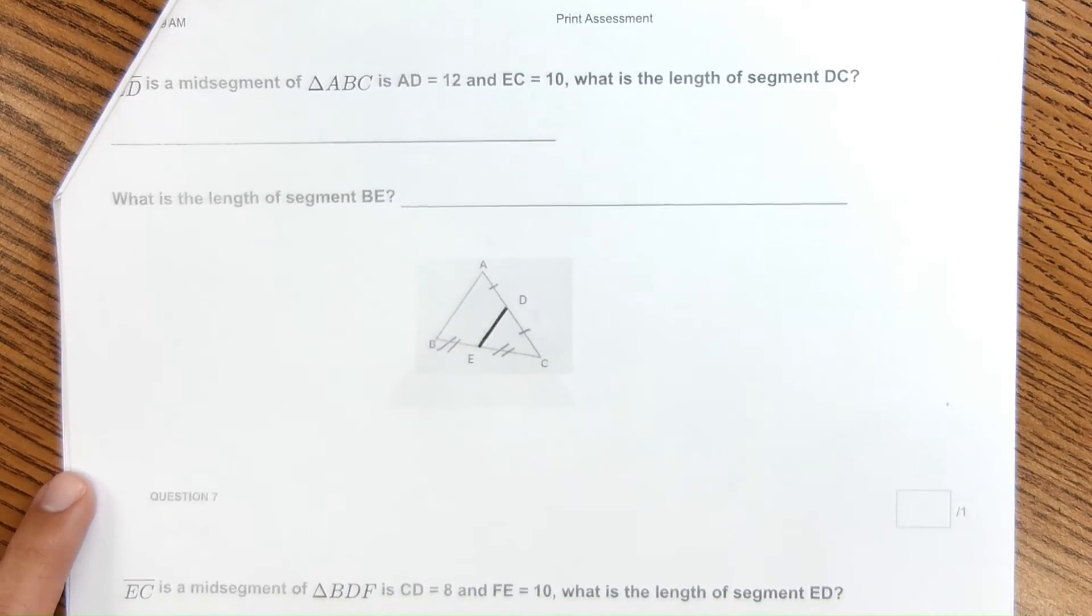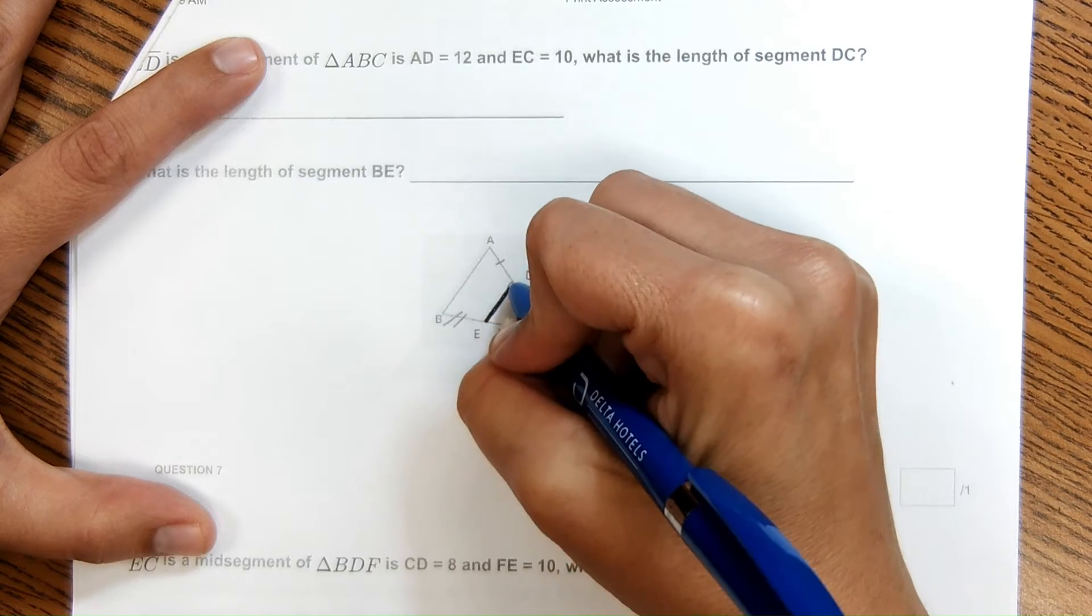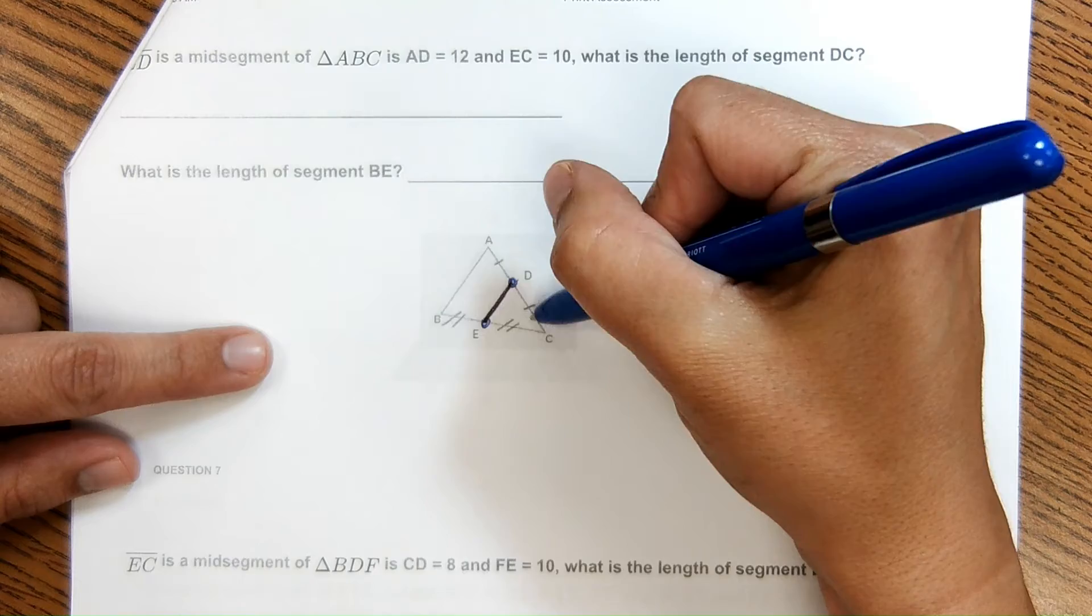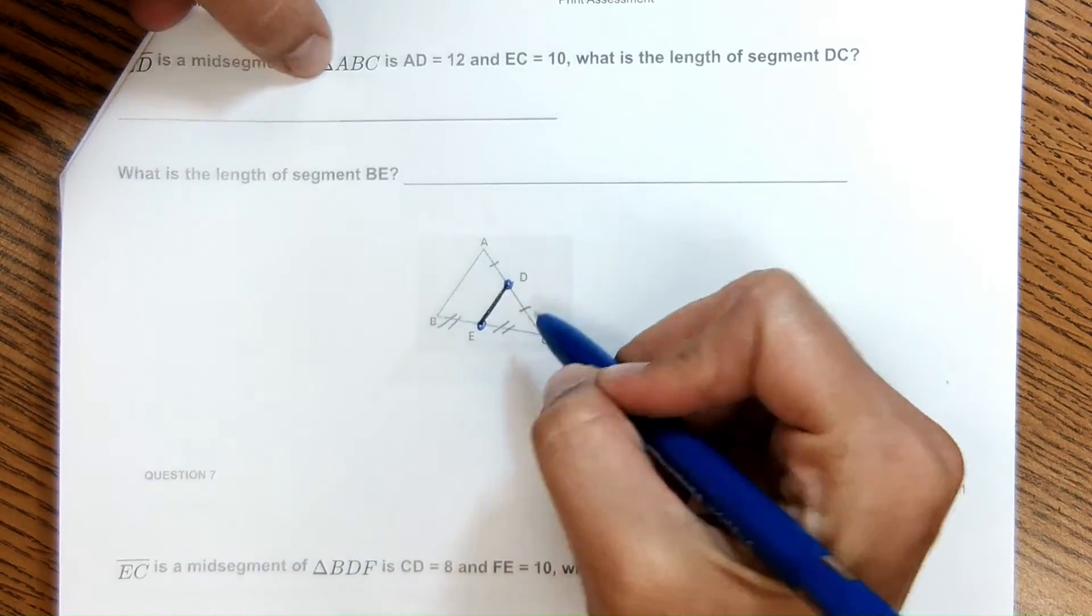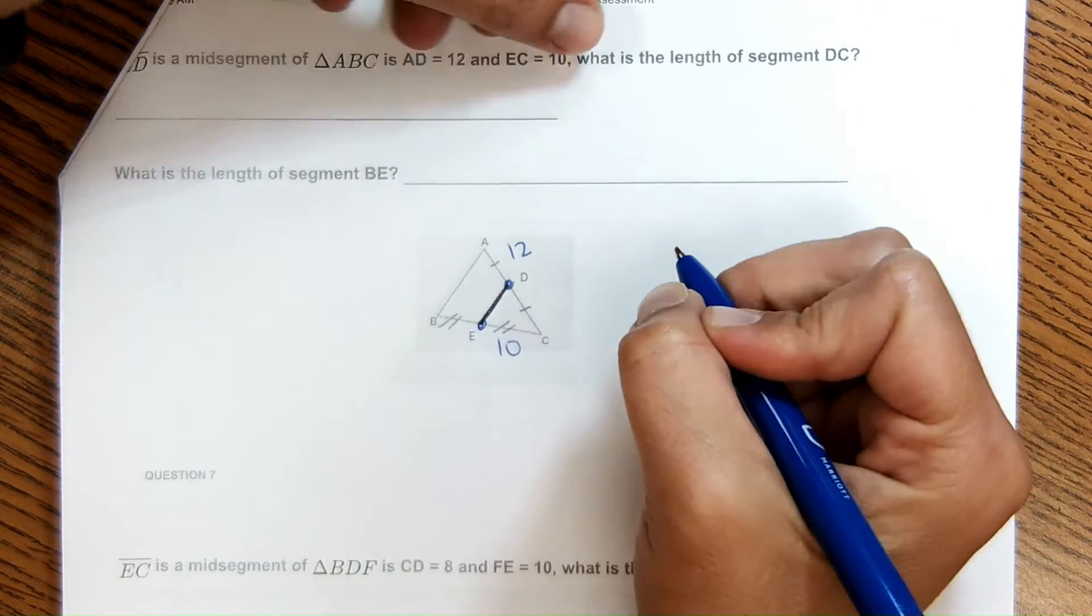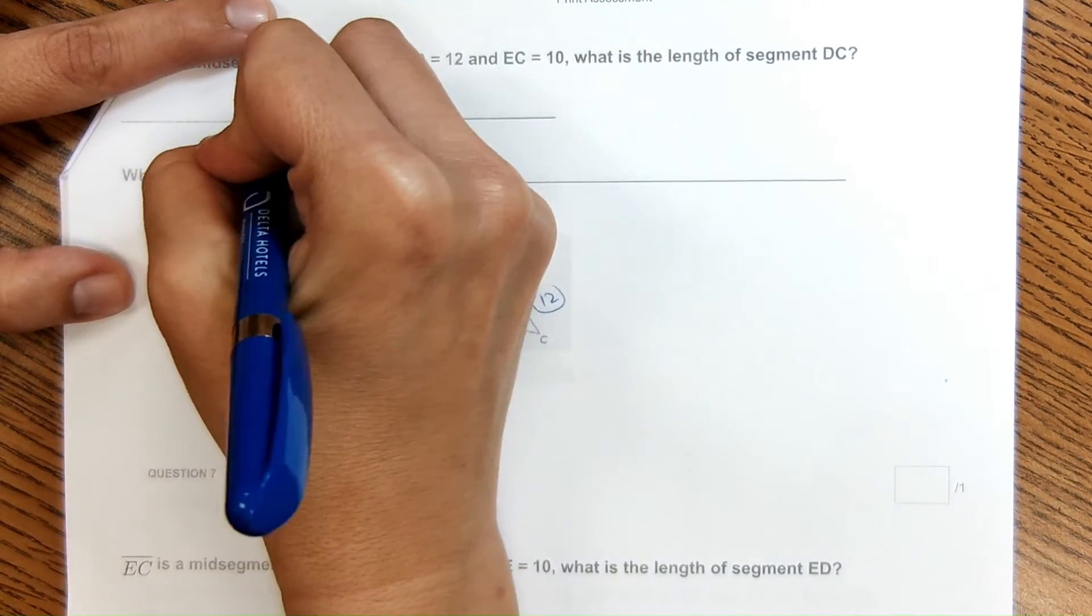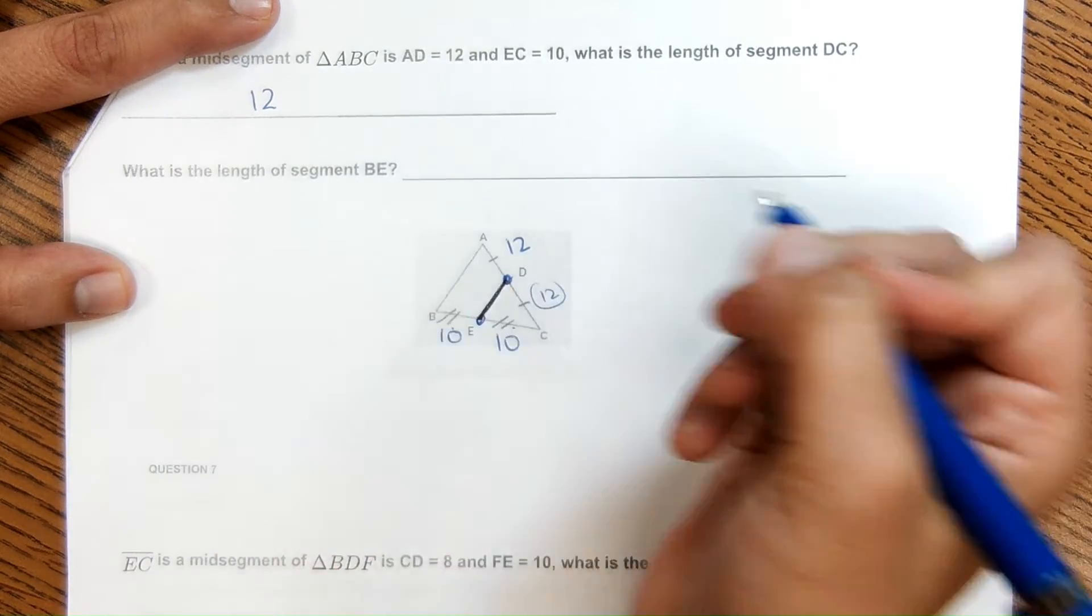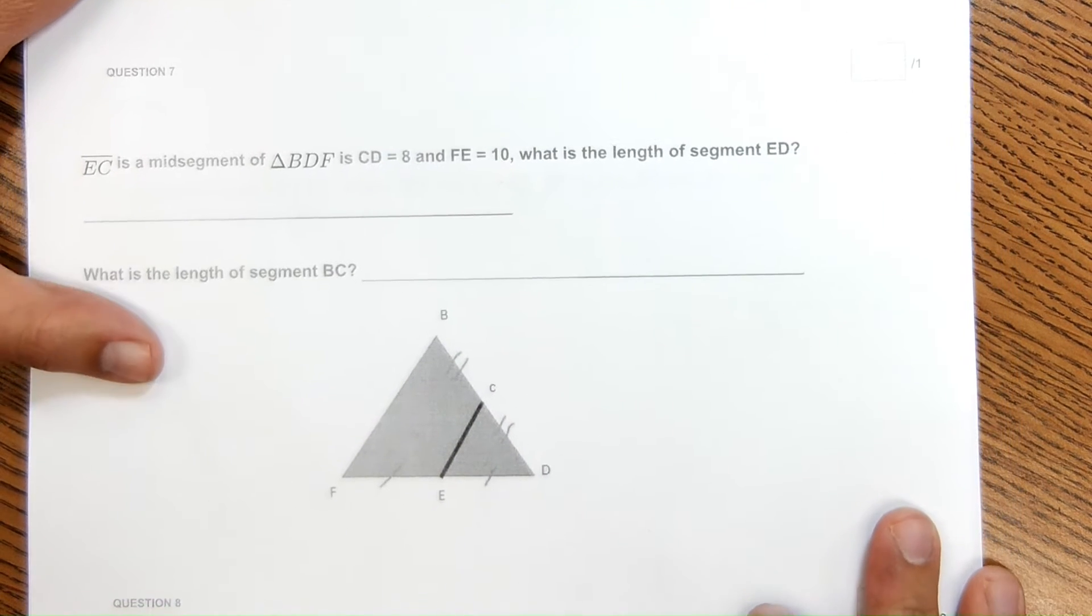The next few are very similar. It says that ED is the mid segment of this triangle. Now mid segment hits at the midpoint of these two lines. So this length is the same length as this. And then this segment is the same length as this. It says AD is 12, EC is 10. What is the length of DC? Well, DC must be 12. So I'll put that here. What is the length of BE? Well, these two segments are the same length. So this must be 10.